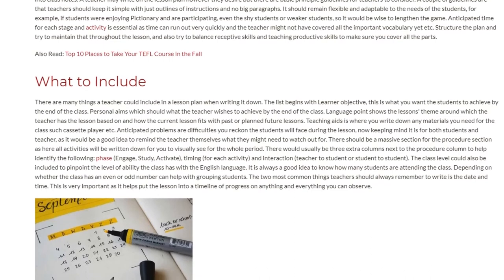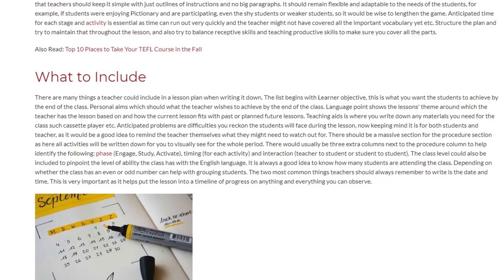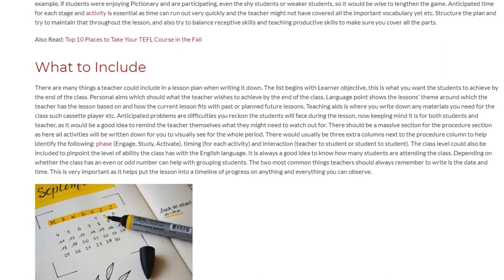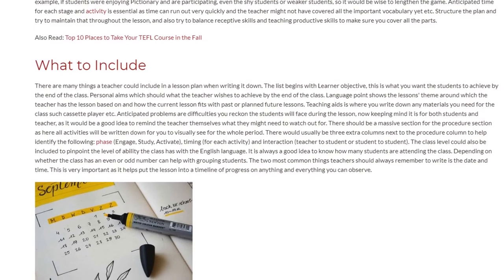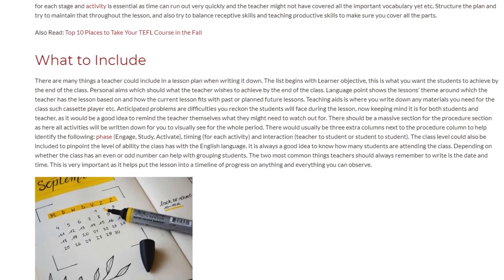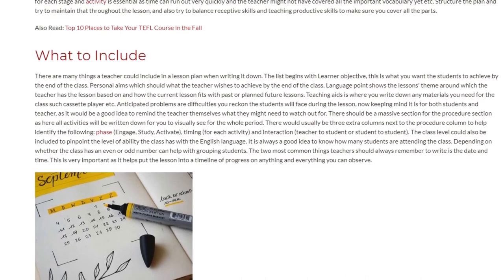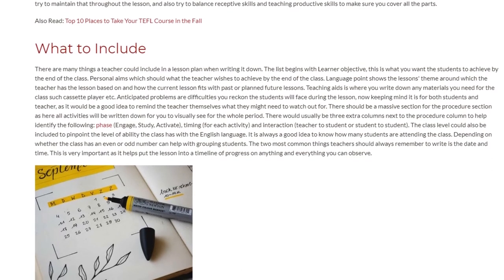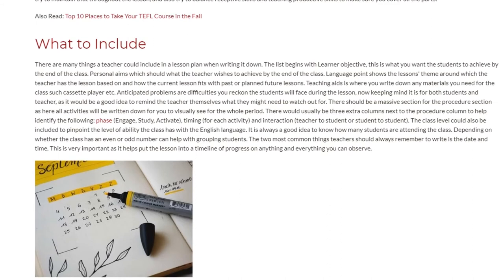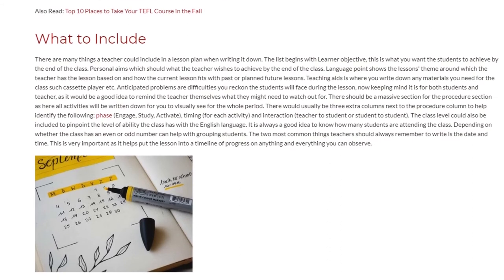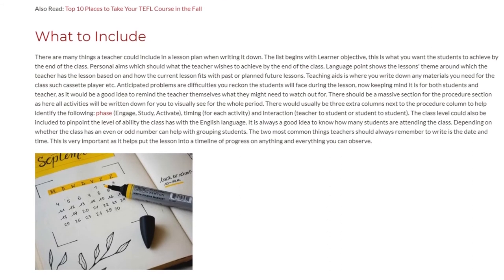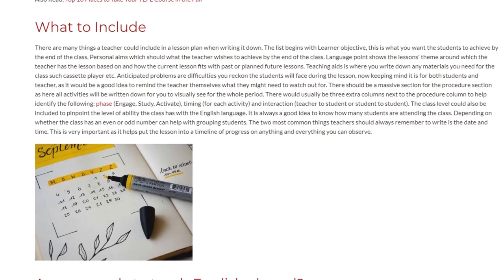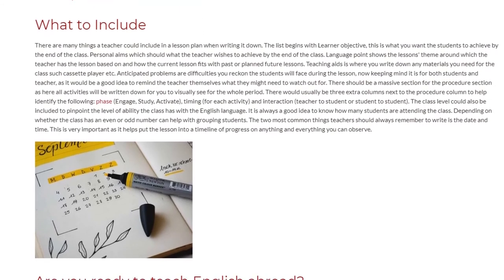There should be a large section for the procedure, as all activities will be written down for you to visually see for the whole period. There would usually be three extra columns next to the procedure column to help identify the following: phase — engage, study, or activate; timing for each activity; and interaction — teacher to student or student to student.